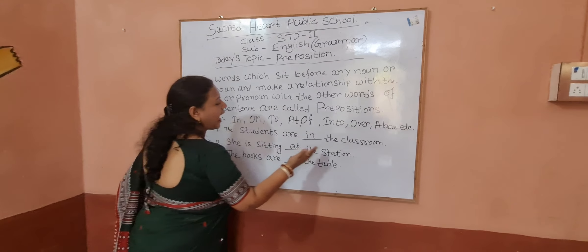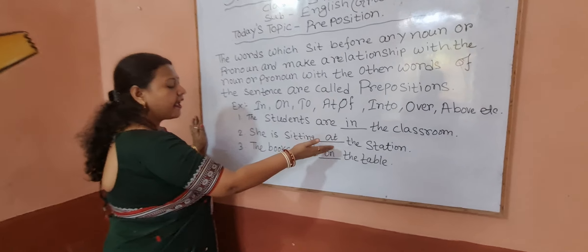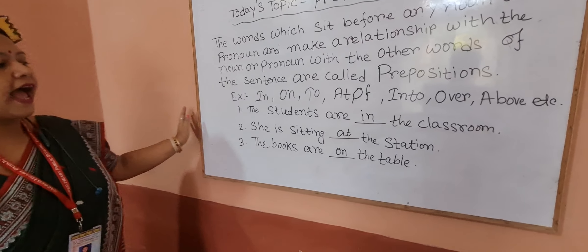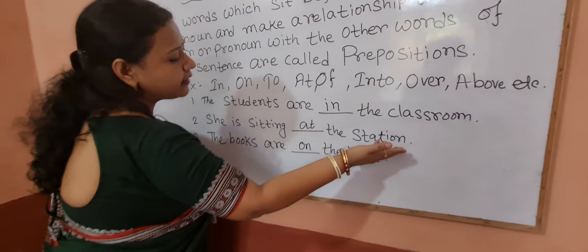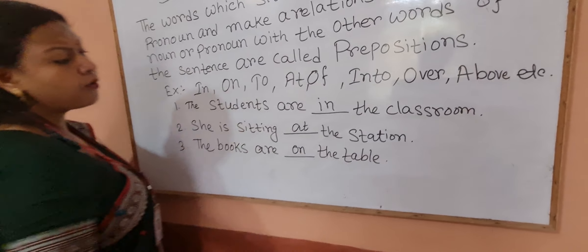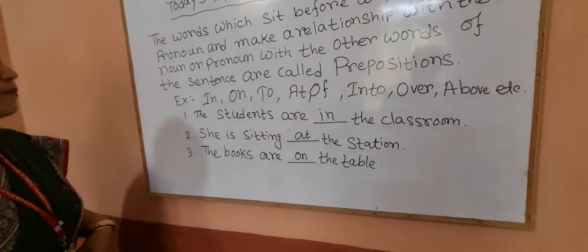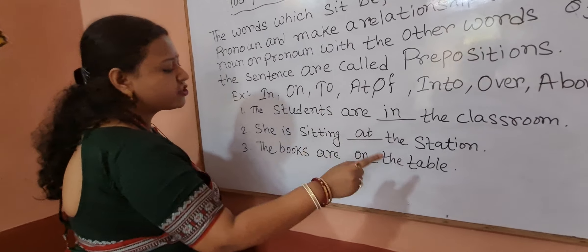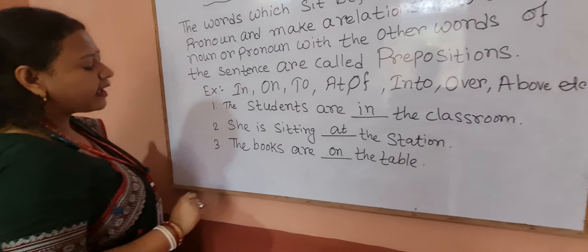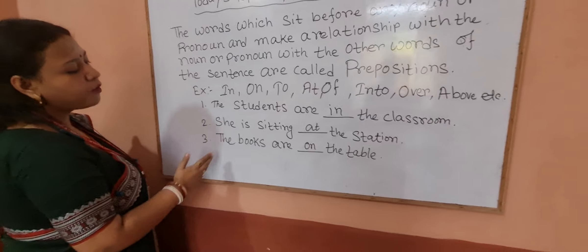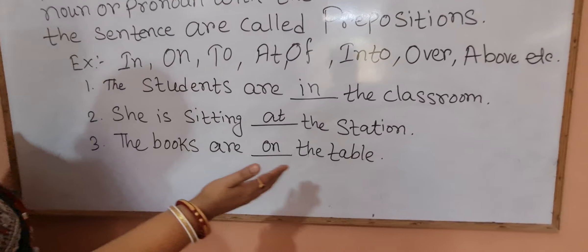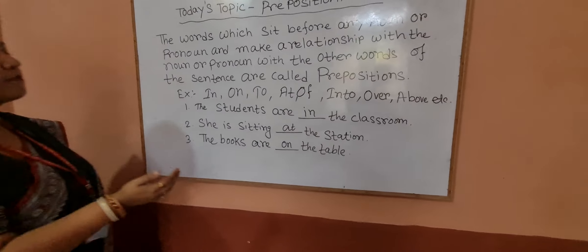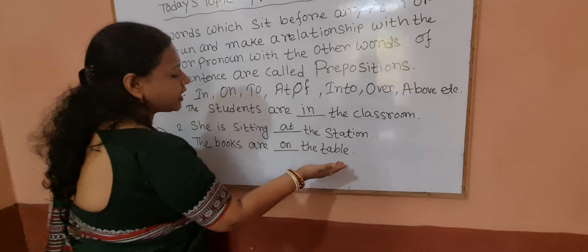Next sentence: 'She is sitting at the station.' 'At' is the preposition. It sits before the noun 'station' and makes a relationship with 'she' and 'station.' Last one: 'The books are on the table.' 'On' is the preposition. It sits before 'table.'